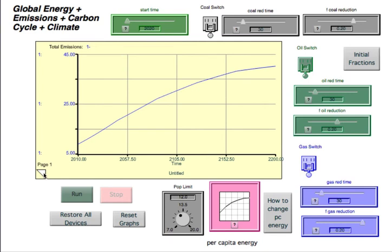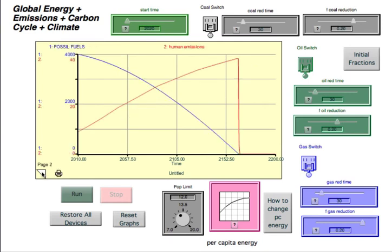Now if I click on the next page you'll see that in reality at this time here about 2064, we would actually run out of fossil fuels. Here's the fossil fuel reservoir. It's dropping, dropping, dropping. It gets to zero. At that point we can't put any more carbon in the air because we don't have any more of these fossil fuels.